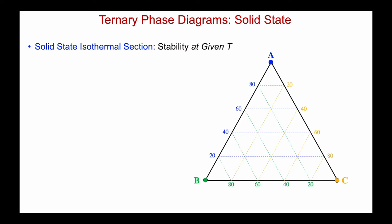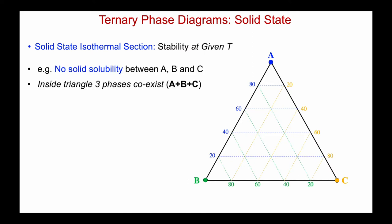Now let's turn to ternary phase diagrams in the solid state. Here we're going to look at solid-state isothermal sections, which represent the solid-state stability at a given temperature. The example we'll show here is one where we have no solid solubility between A, B, and C — they're completely immiscible with each other. So any composition in the middle of the system is just going to phase-separate into pure A plus pure B plus pure C, and those three phases coexist everywhere within the triangle.